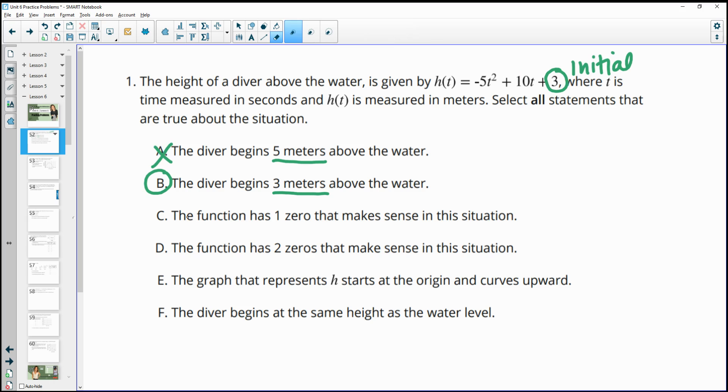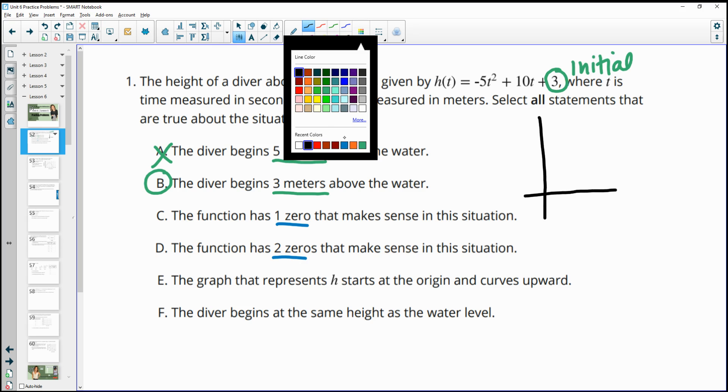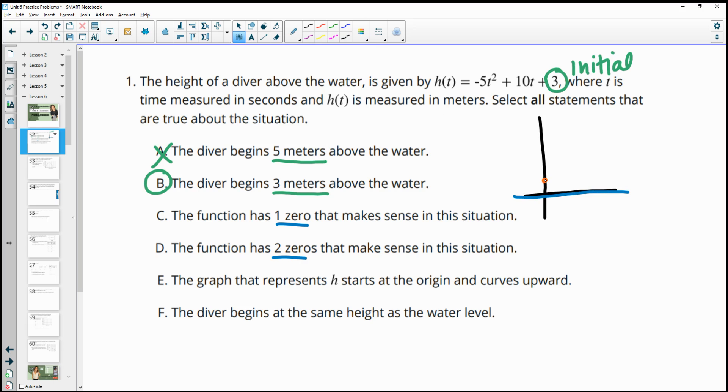Then part C says the function has one zero that makes sense, and part D says that it has two zeros. So again, only one of these can be true. And so when we think about these, it's talking about the diver, the height of a diver above water. So then they're going to dive, well, here's the water, right? So this would be the water. And then the diver is going to start here at three meters, and then they're going to jump and dive into the water. And so there are two zeros to this function because it's going to go this way, but the diver is not going to go backwards in time. Remember, this is your time. So this is zero seconds. This would be negative one seconds, and that doesn't make sense. So there's only going to be one zero that makes sense, not two.